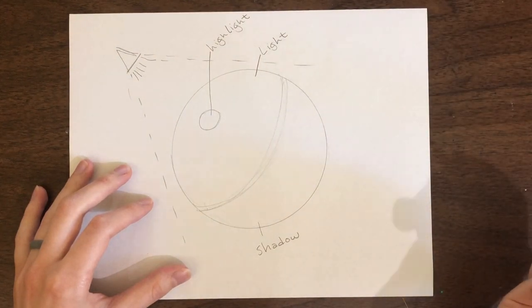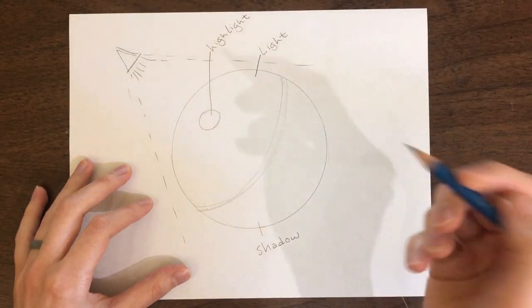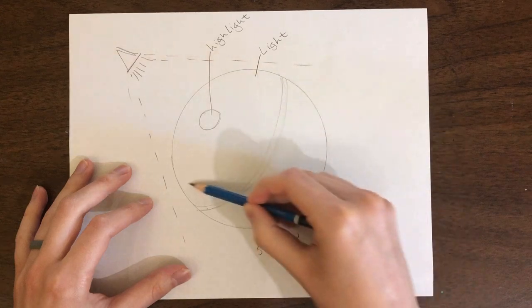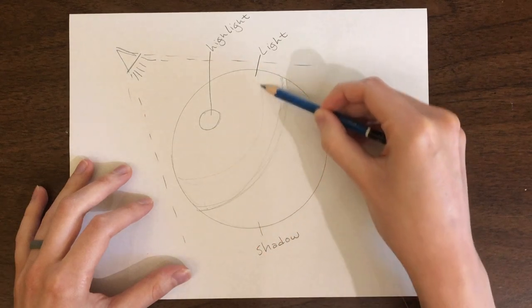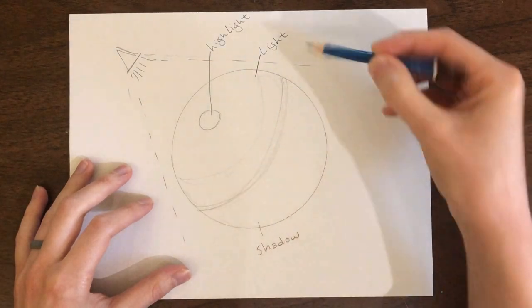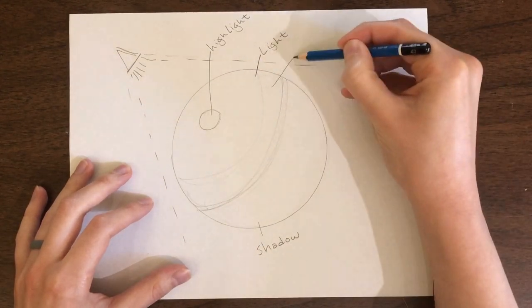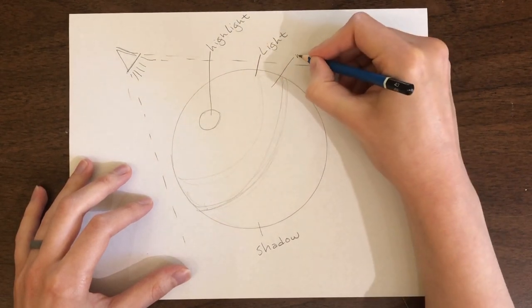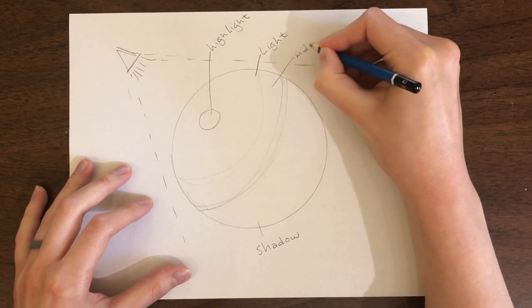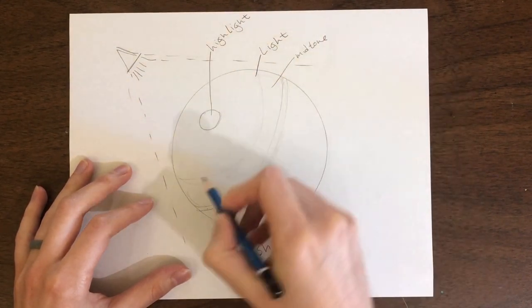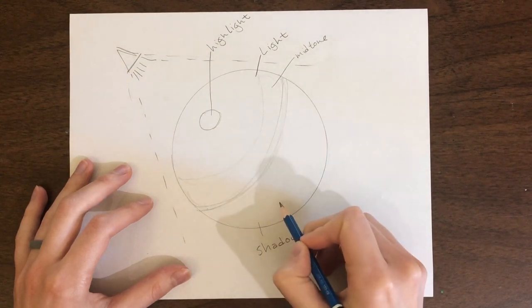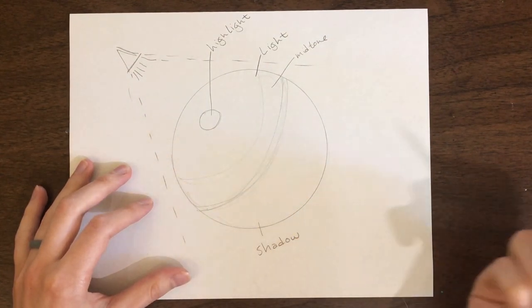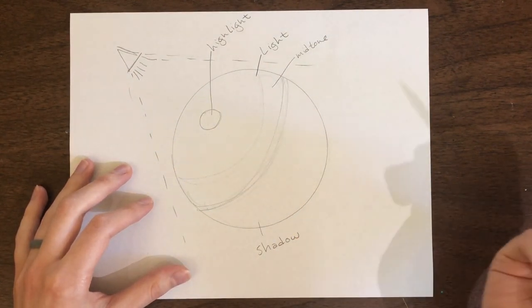The area underneath the highlight, around here, is sometimes called the mid-tone. Some people differentiate that from just the light area. This is kind of the gradient that leads into the core shadow and the shadow area.